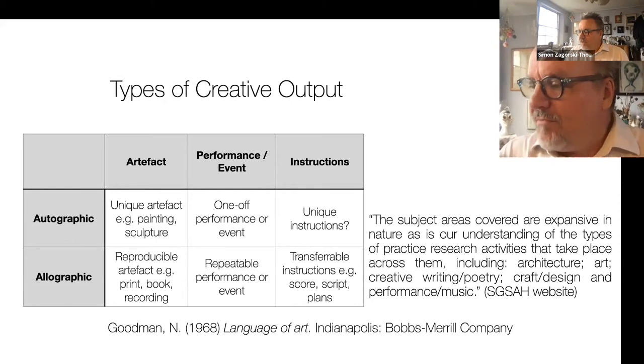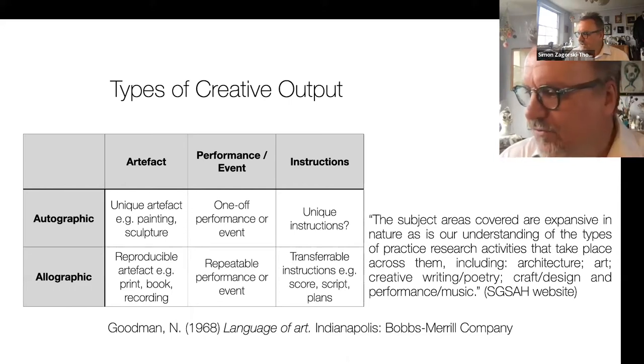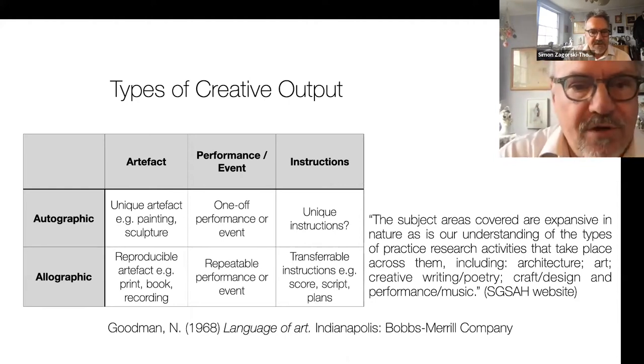Nelson Goodman introduced the terms allographic and autographic to the world of art. Autographic relates to a unique one-off output, and allographic relates to artwork that can exist in multiple equally viable instances. So a one-off painting or a book that can be printed as many times as you'd like. There's a lot of argument about how these terms can leak into each other through concepts like limited editions, original manuscripts, cover versions. But while knowledge may be embodied in these outputs, practice as research is about practice or process.